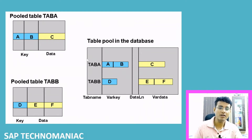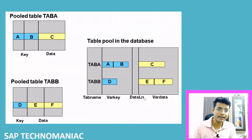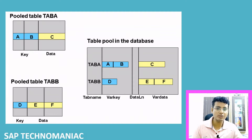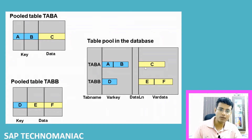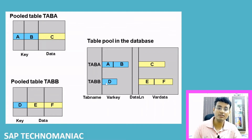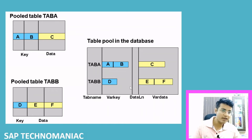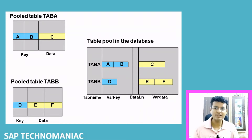How is it stored? There will be another table with columns for table name, key fields, data length, and variable data. So for table A, key fields A and B are stored along with data C. Like that we can have multiple data entries with the data length stored. Same way for table B, based on its key field the data is stored — that is how we store multiple tables' data at one place in a pool.